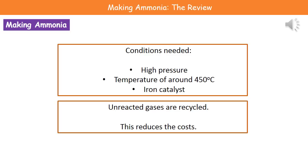To make ammonia we need certain conditions: a high pressure, a temperature of around 450 degrees centigrade, and an iron catalyst. One thing we do to reduce the costs of producing ammonia is to recycle any unreacted hydrogen and nitrogen, feeding them back into the system.